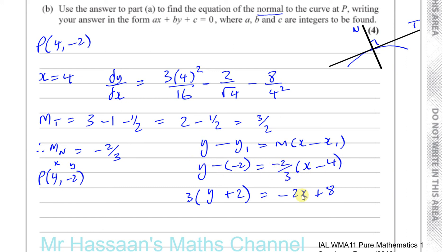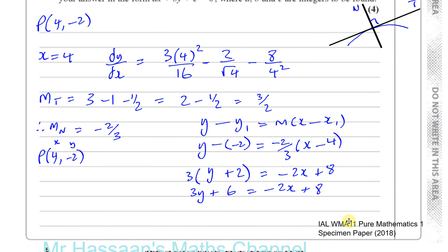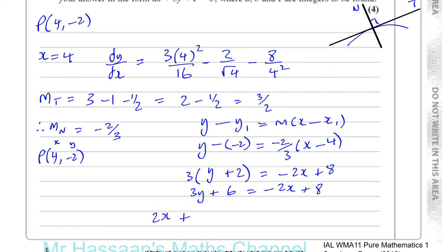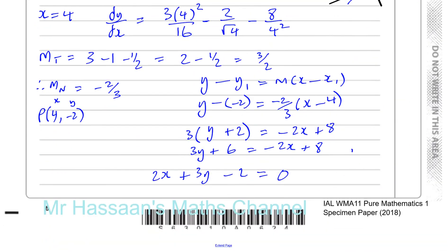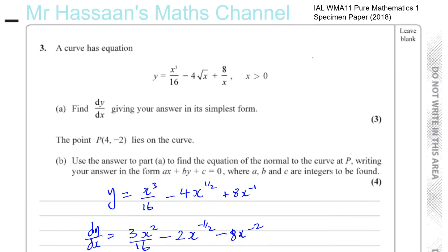Expanding the left bracket gives 3y plus 6 equals minus 2x plus 8. We want the form ax plus by plus c equals zero with the x term positive, so rearranging: 2x plus 3y plus 6 minus 8 equals zero, giving 2x plus 3y minus 2 equals 0. Therefore a equals 2, b equals 3, and c equals minus 2. That's the answer to question three.